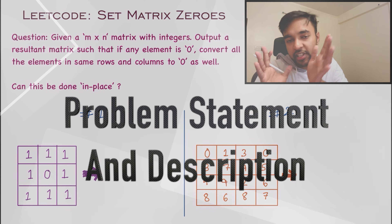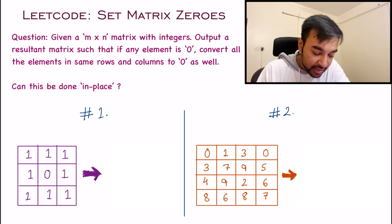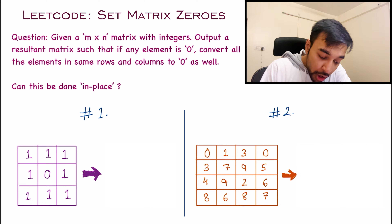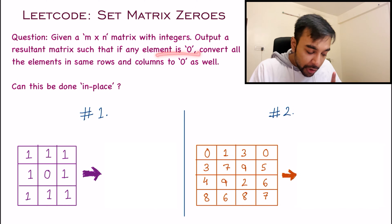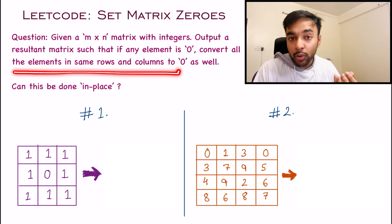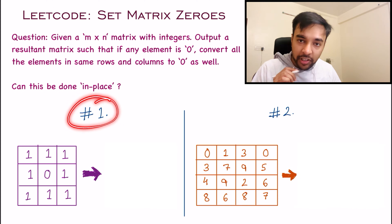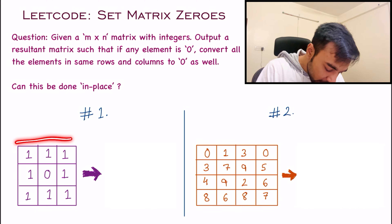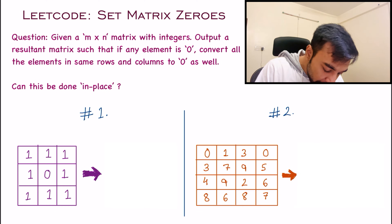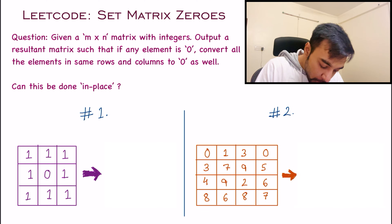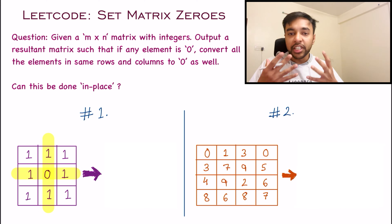Let's make sure we understand the problem statement correctly. You are given an M×N matrix that has some integers. You have to output a resultant matrix such that if any element is zero, you have to convert all the other elements in the same row and column to zero as well.